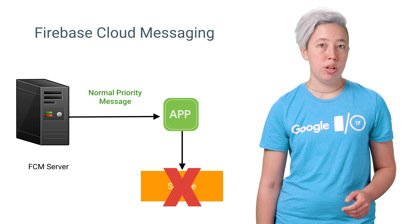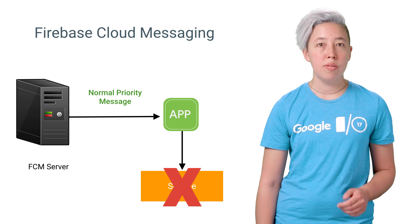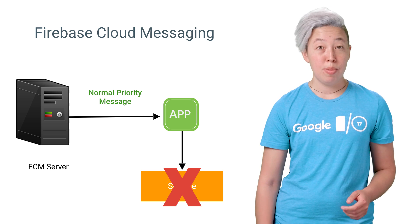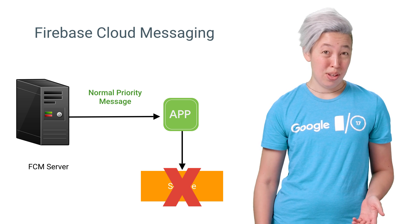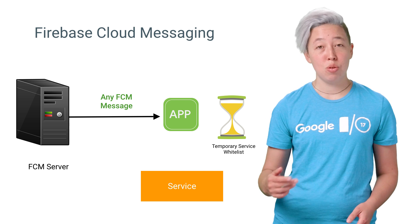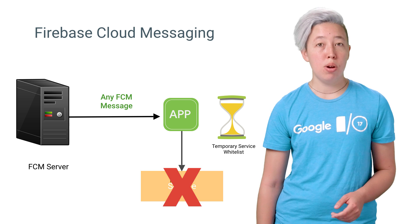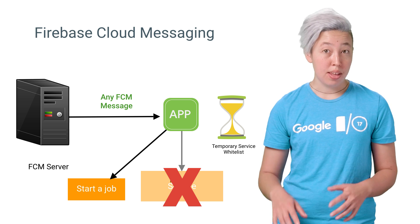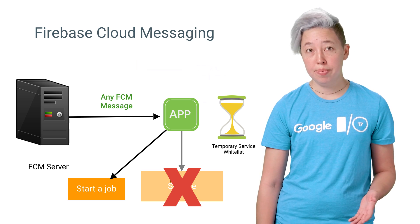If it's a normal priority FCM message, the message is delivered when a user turns the device screen on or during the Doze maintenance window. You are not whitelisted to start services, though. So if your app receives both high and normal priority messages, one approach is to try starting the service and, if for any reason that fails, have a fallback such as starting a job.